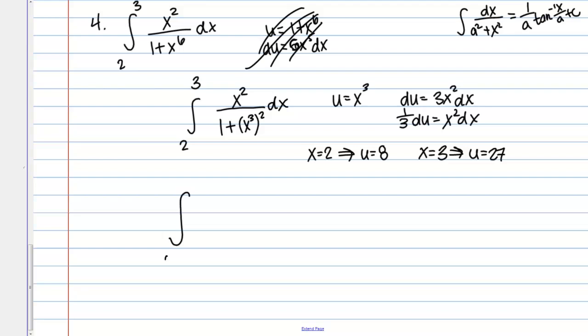My new bounds are from 8 to 27, and then what I have is, well, I've got 1 over 1 plus u squared, and then x squared dx is 1 third du, so I can go ahead and put that 1 third out front, and now you can see probably that arctangent form a lot more clearly.